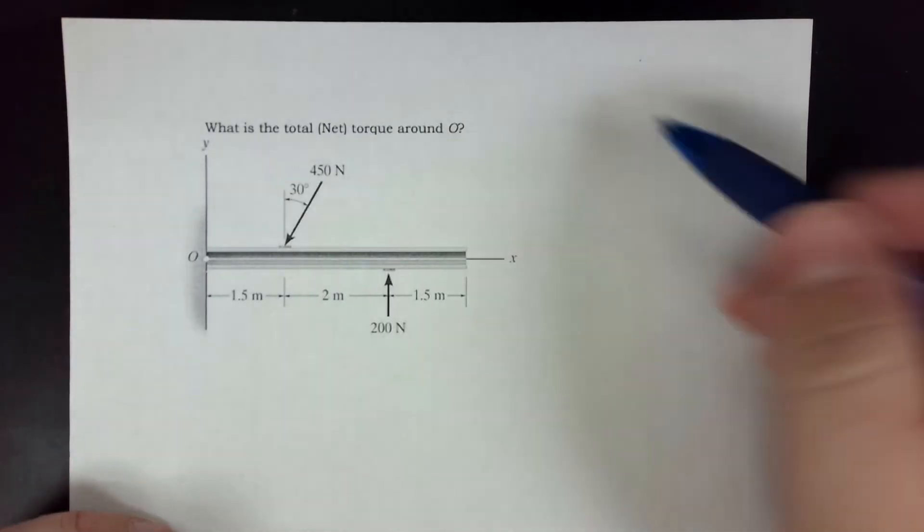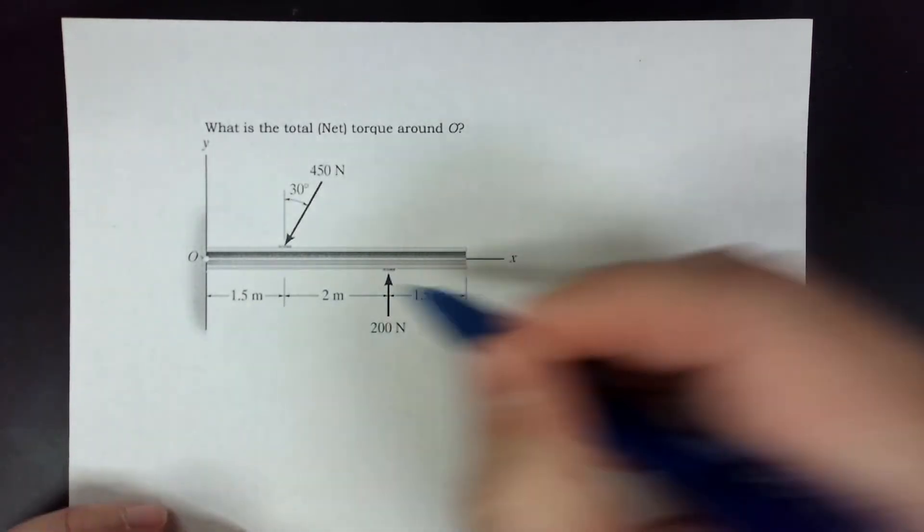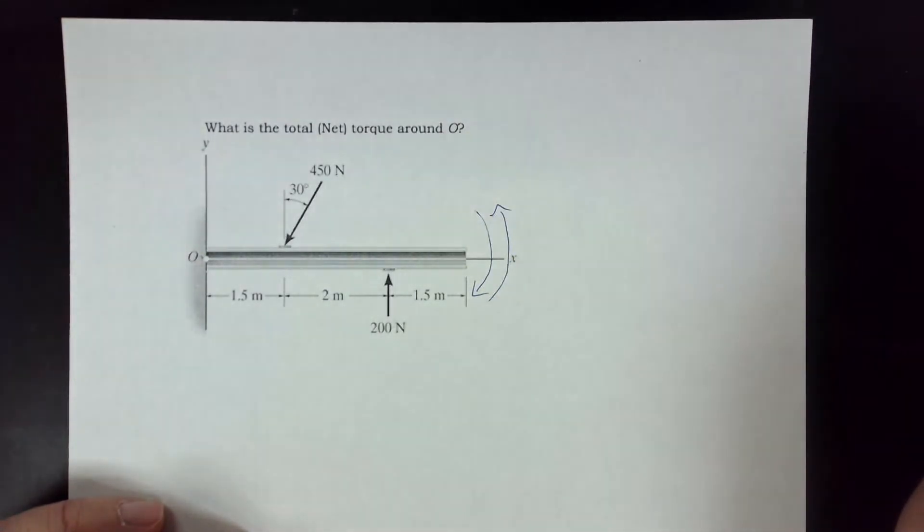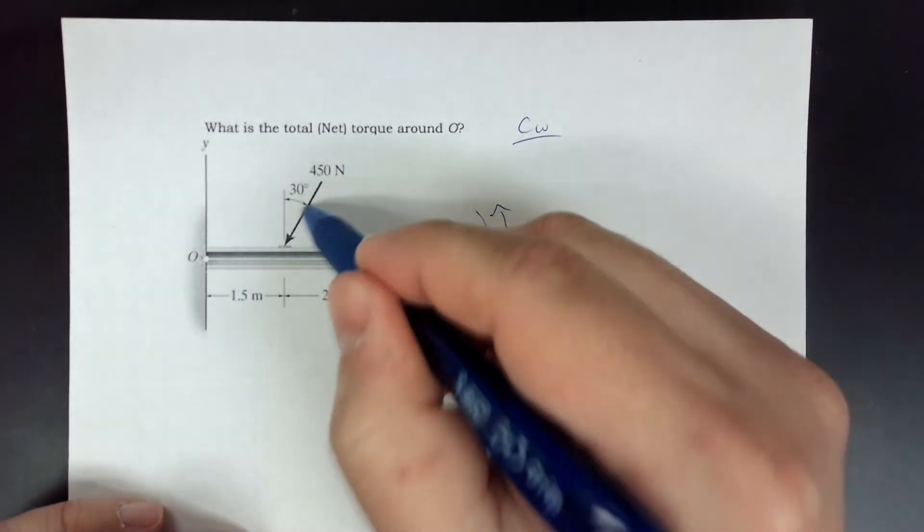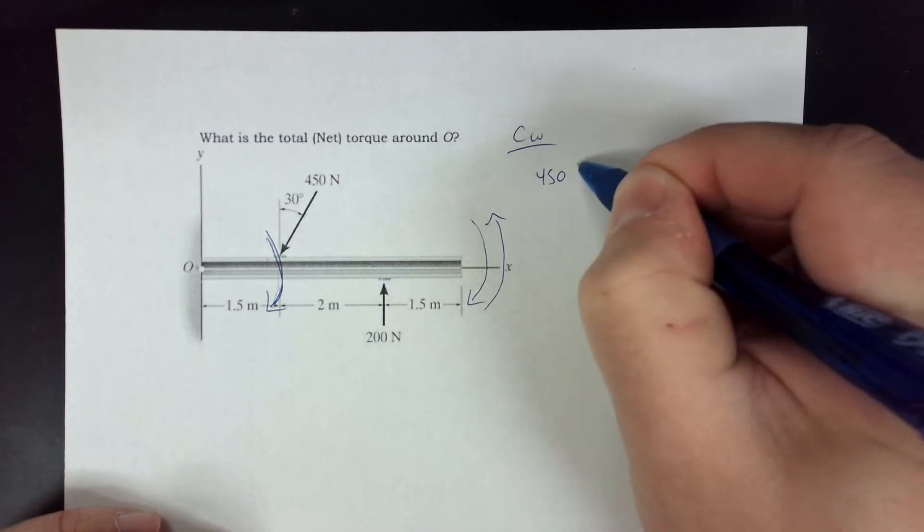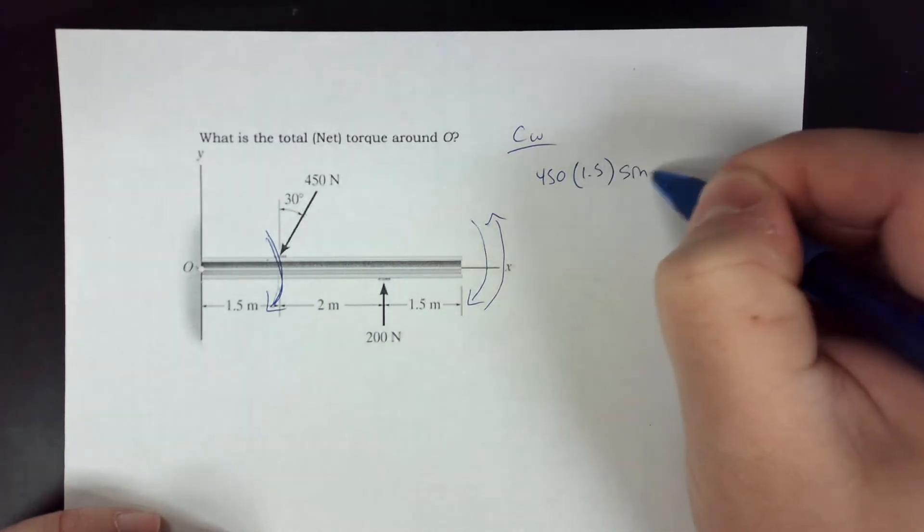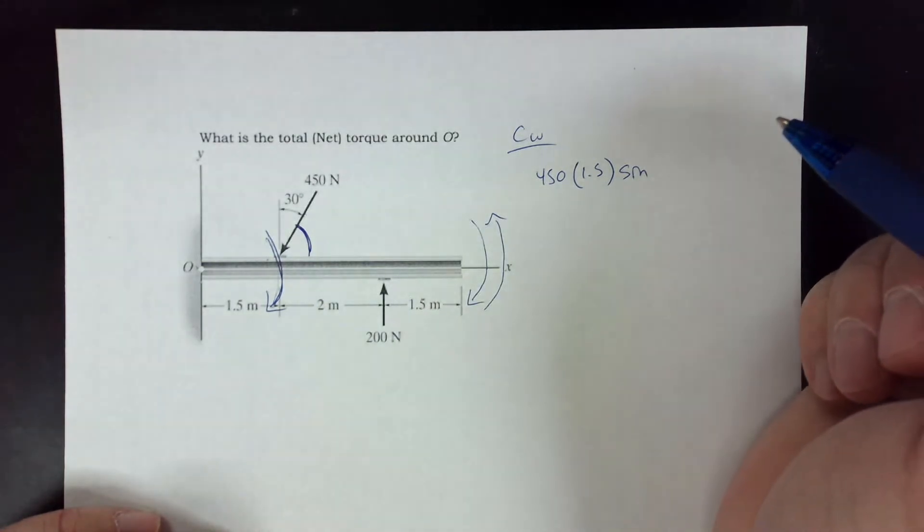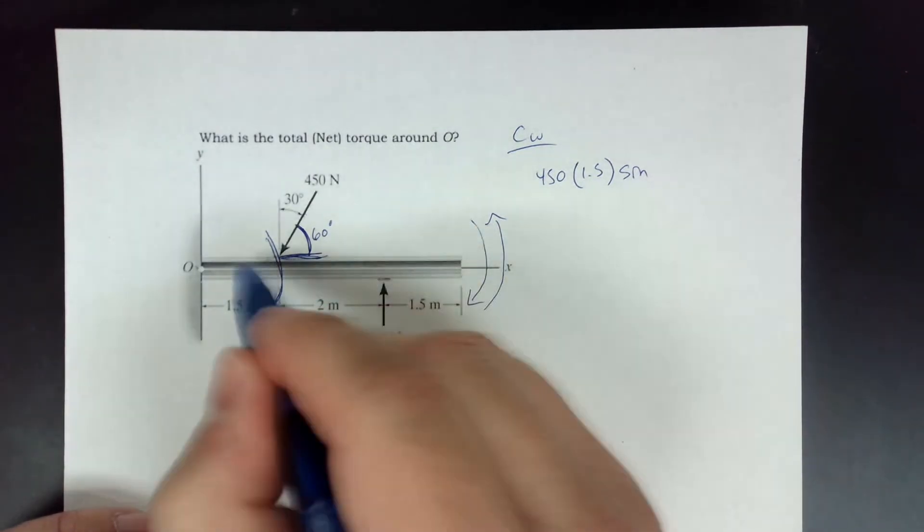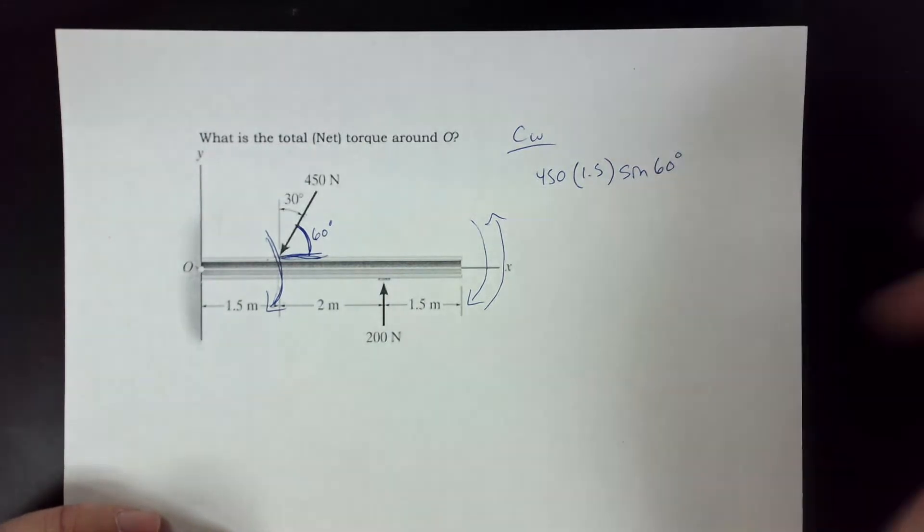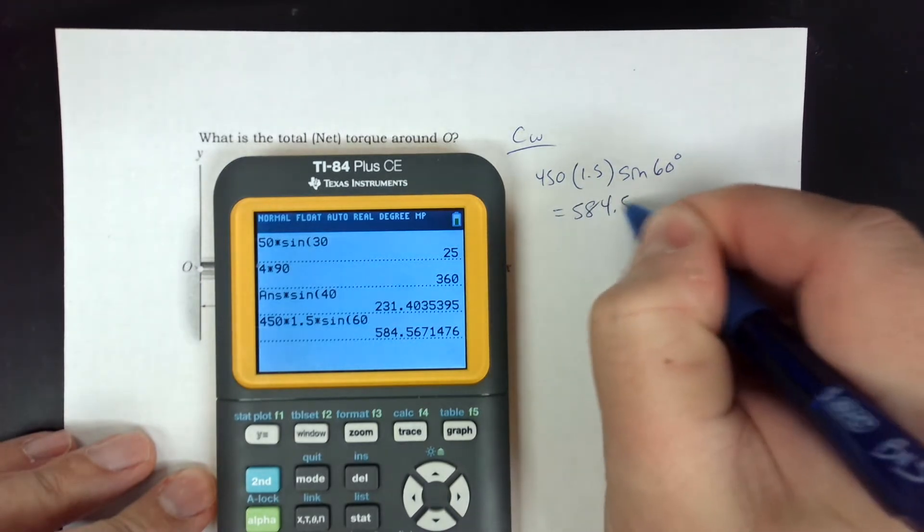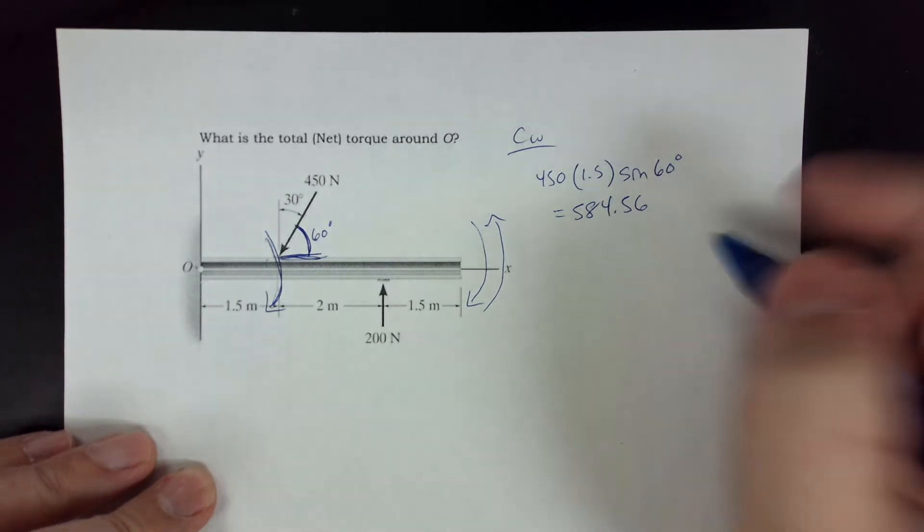So what about something like this where I'm trying to find the net torque around this point? When you're trying to find the net torque around a point, I need to sum all my things making it turn clockwise versus all my things making it turn counterclockwise. So I'm going to start with the clockwise stuff. This one is making it turn clockwise. There's a torque turning it right there. So I'm going to say this is 450 times R is 1.5 times the sine of my angle from there. Because I want the angle that's perpendicular. So if that's 30 degrees, that means this is 60 degrees because I need the angle from the surface of where R is. So this is going to be 60 degrees. So that is 584.56.